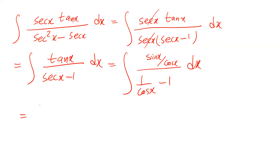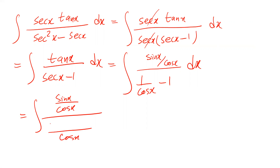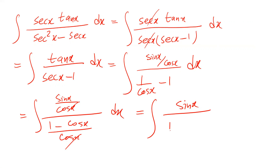So therefore this one will be equal to the integral of sine x divided by cosine x, divided by 1 minus cosine x over cosine x dx. The cosine x terms cancel out, and therefore this one will be equal to the integral of sine x divided by 1 minus cosine x dx.